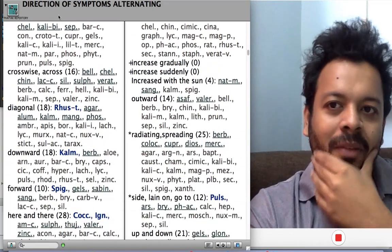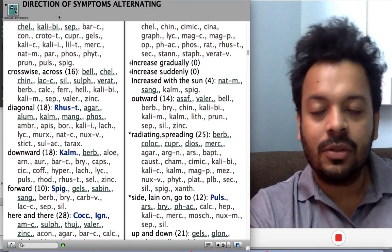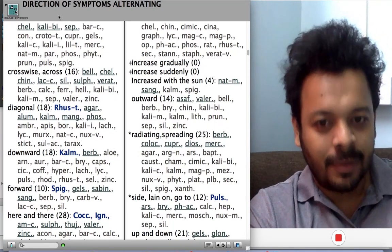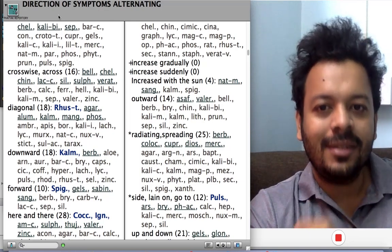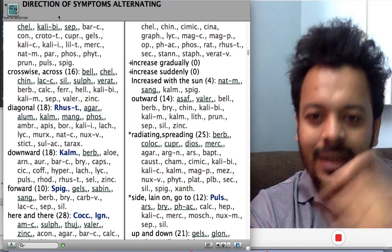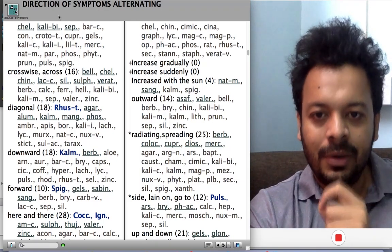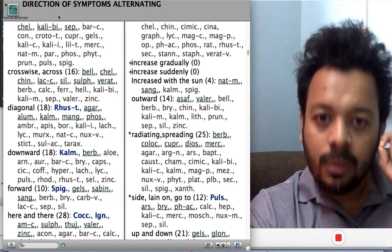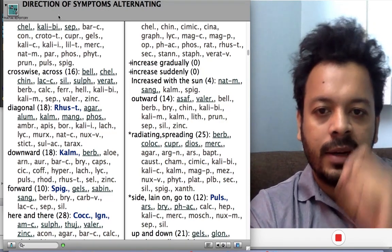As you know, Phatak Repertory is an alphabetical repertory. You will find very few remedies in every rubric because they are very clinically verified. Most of the remedies in Phatak Repertory are coming from Boger's Synoptic Key, Phatak, Clarke, and Kent.